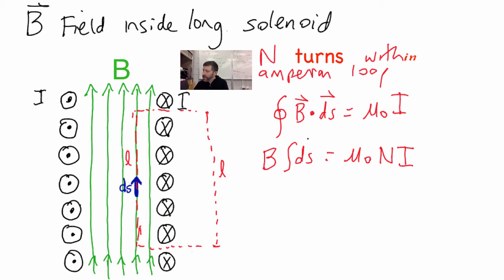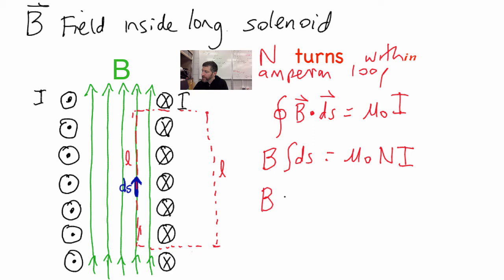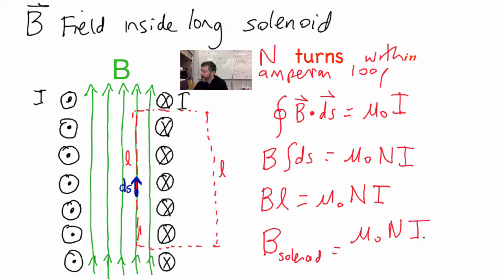The only part of the integral that counts is along the left side of length L, because B is perpendicular to dS elsewhere, the field is zero between the coils, and it's zero outside the solenoid. So the whole integral reduces to B times L equals μ₀ times N times I. Solving for B, we get B (due to a solenoid or coil) equals μ₀NI divided by the length L of our Ampere loop.